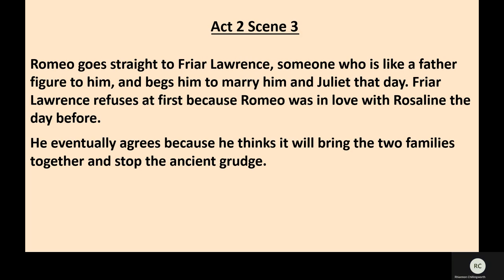In Act 2, Scene 3, Romeo then goes straight to Friar Lawrence — who is a bit like a father figure to Romeo — and begs him to marry him and Juliet that same day. At first Friar Lawrence is very reluctant because Romeo was just in love with Rosaline the day before, saying 'young men's love lies not in their hearts but in their eyes.' Eventually he agrees because he thinks it will bring the two families together and stop the ancient grudge — against his better judgment, really. Unfortunately, that decision comes back to bite him horribly.